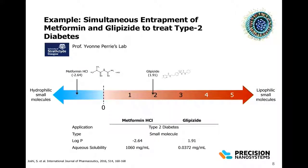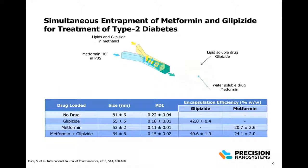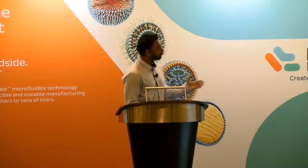The next example is from Dr. Perry's lab at the University of Strathclyde. Metformin and glipizide are two oral antidiabetic drugs generally used in combination to treat type 2 diabetes. The problem is that both drugs have contrasting solubilities, making it very difficult to encapsulate them into the same drug delivery system. They encapsulated both drugs into liposomes — glipizide was added into the methanol phase along with the lipids, metformin was added into the aqueous phase, forming liposomes with metformin passively encapsulated within the core and glipizide as part of the lipid bilayer.